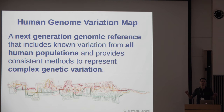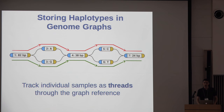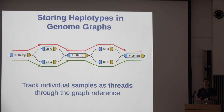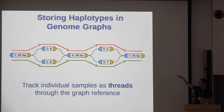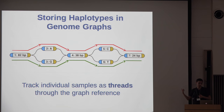A graph will allow you to do things like translocations and inversions just by wiring them up. In this context, one thing we're particularly interested in is the storage of haplotypes. The easiest way to do this is by storing people's genomes as threads in the graph — basically sequences of visits to different nodes. One person's genome might take a red path through nodes at the top, another might take a green path through nodes at the bottom, and you could even have both haplotypes in one individual.